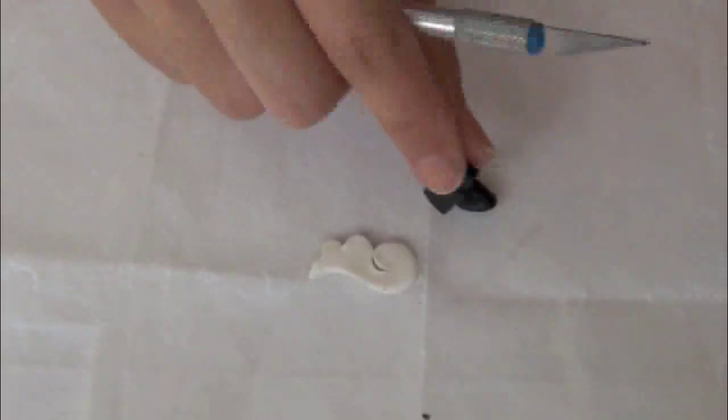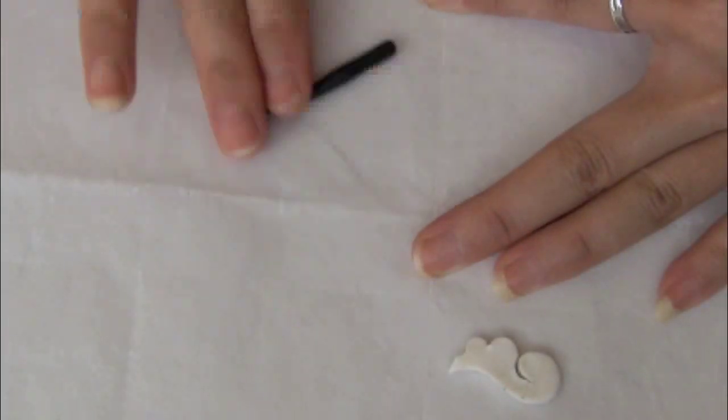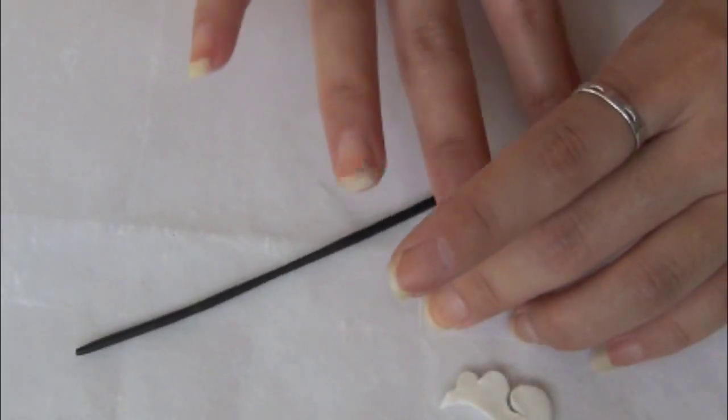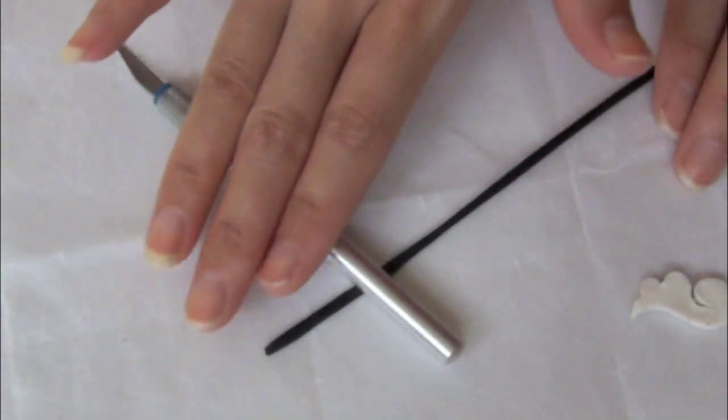Take a generous amount of black polymer clay and start rolling it out into a long string. I used the same concept on the Hello Kitty bow. So if you guys know how to make the Hello Kitty, this will be really easy for you.